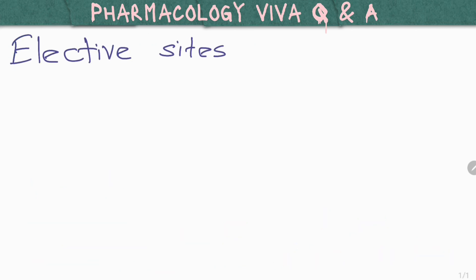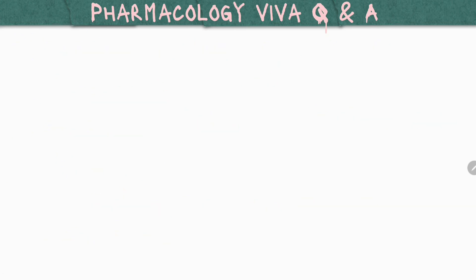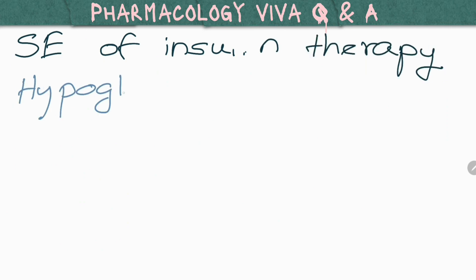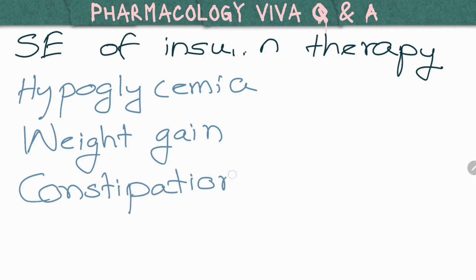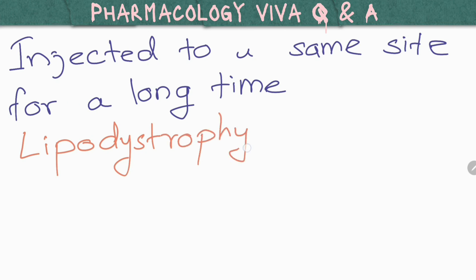What are the elective sites to inject insulin? Deltoid region, anterior lateral aspect of thigh, two inches away from umbilicus. What is the adverse effect that occurs if the patient has injected to the same site for a long time? Lipodystrophy at injection site. Is there something we can use to avoid variation of absorption site? Yes, we can use stencils.